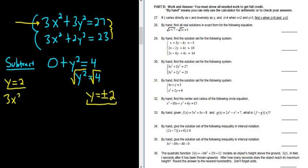So 3x squared plus 3, and then y is 2, so 2 squared. It's a weird looking 3. It equals 27.